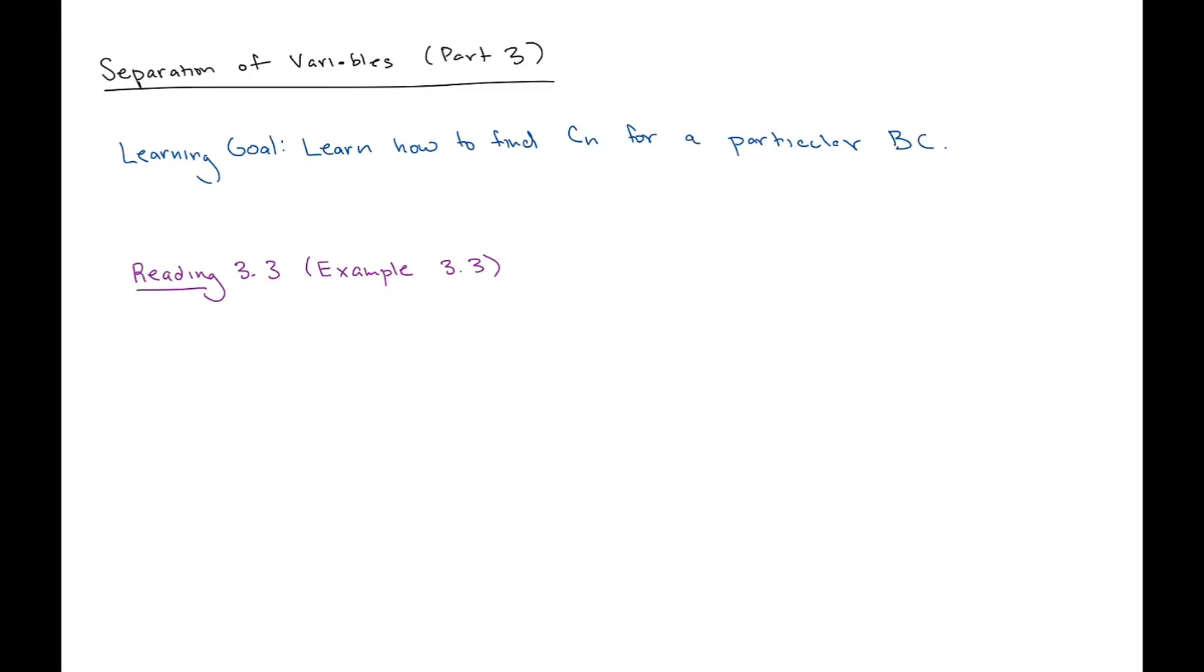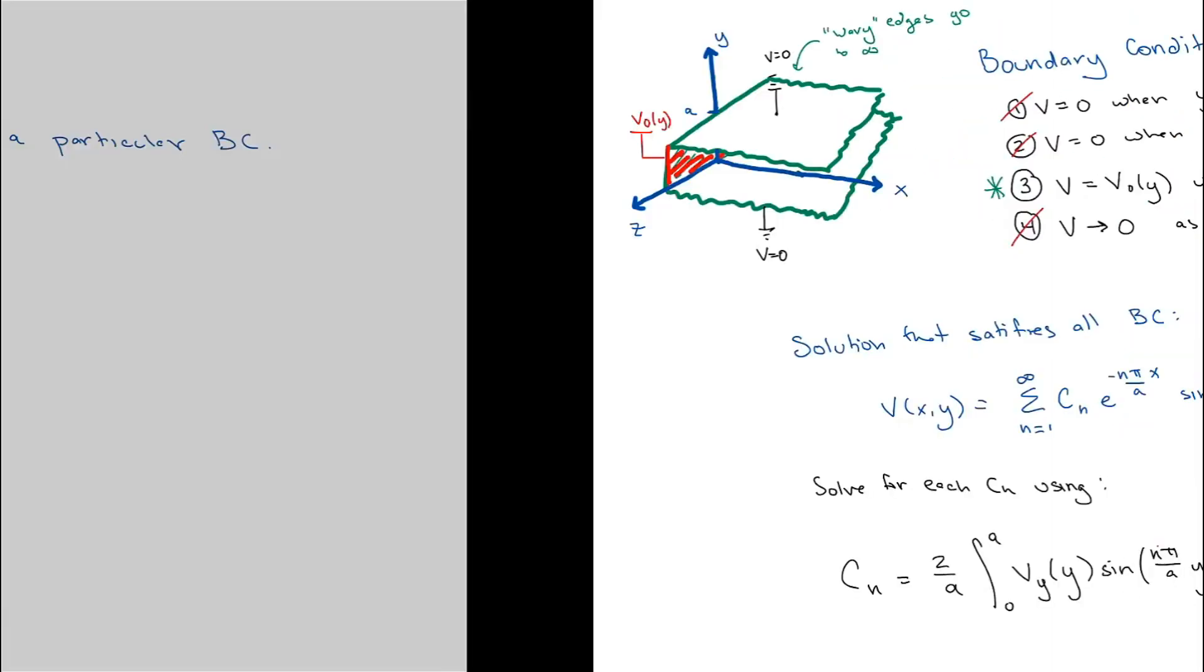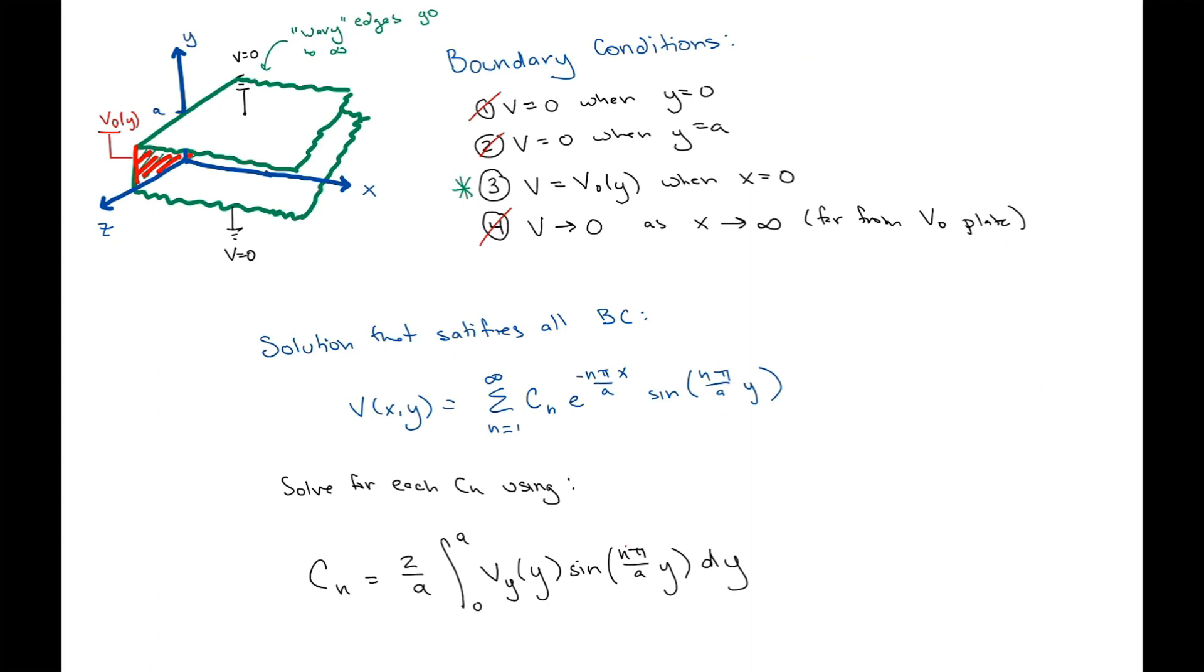Okay, let's keep trucking along with this first example. This, I think, is officially part four. And we're just going to get a little bit more specific. This one, hopefully, would be pretty short. So now we're going to learn how to find those coefficients C sub n for a particular boundary condition. Let's start back at the beginning again and see where we're at.